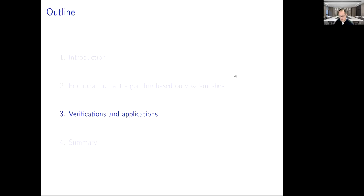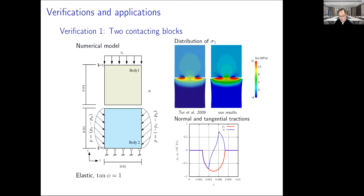Let's see the verification and application. The first verification is an example of two contacting blocks. The upper block is subjected to a prescribed vertical displacement. The lower block is subjected to distributed tractions. The bottom is fixed. This figure shows the comparison of our results and the FEM results. We can see the results are identical.